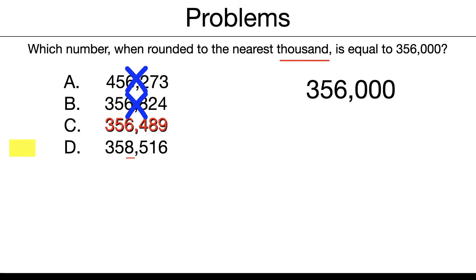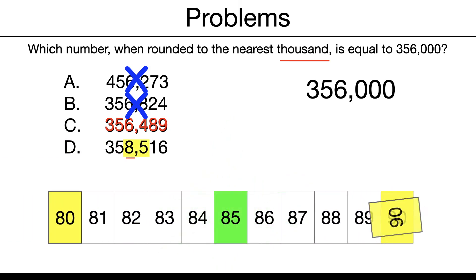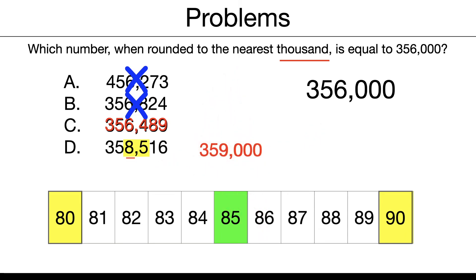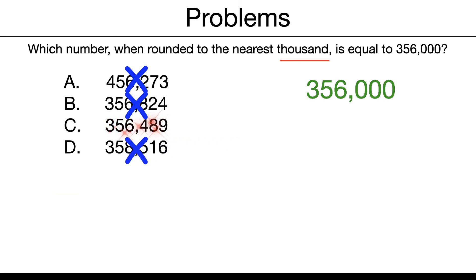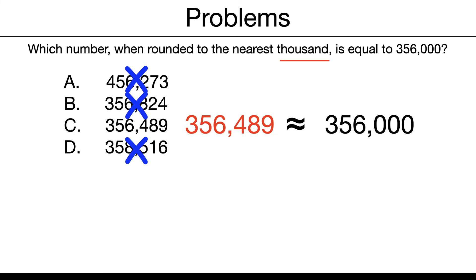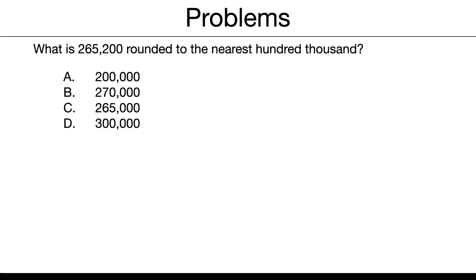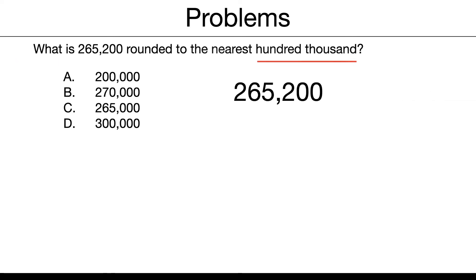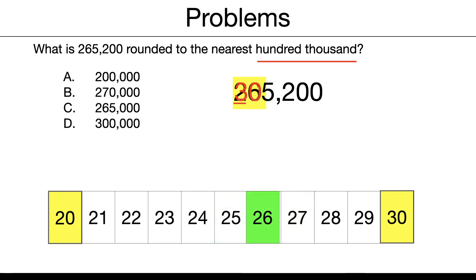356,489 rounds to 356,000 using our approximately equal to symbol. What is 265,200 rounded to the nearest 100,000? This problem is a little bit easier. We're going to rewrite it — 100,000, underline, box. 26 is going to round to 30. We have nothing on the left, but we have four digits to the right — don't forget your comma. So our final answer is 300,000.